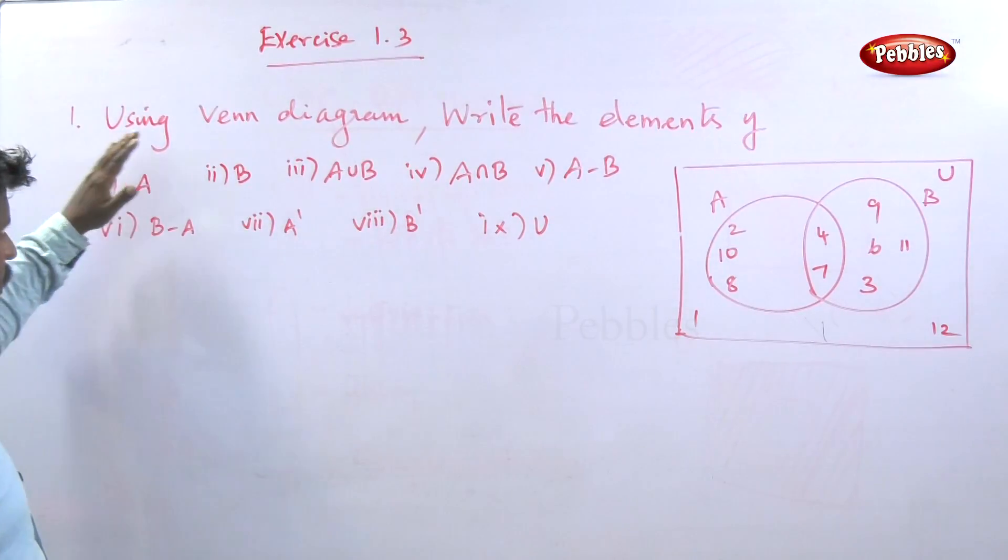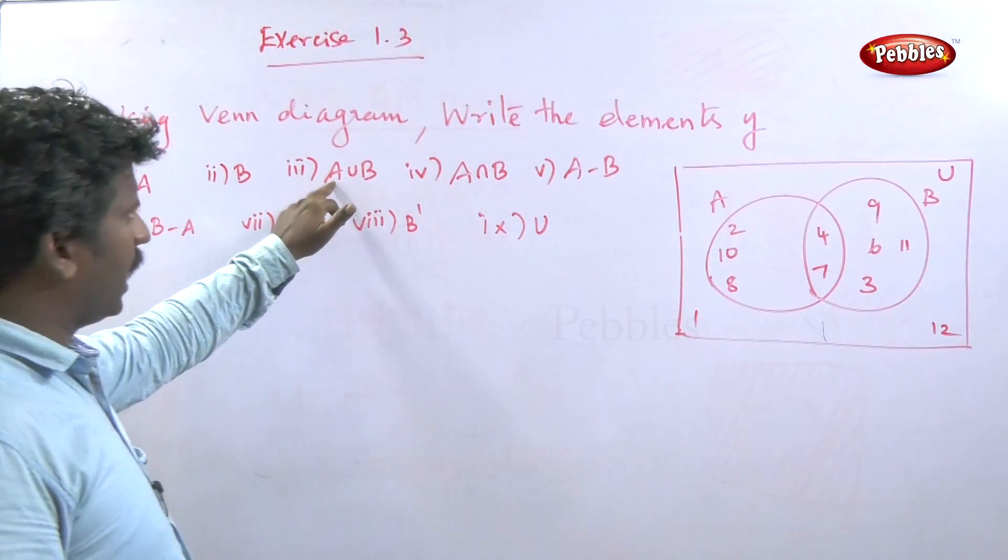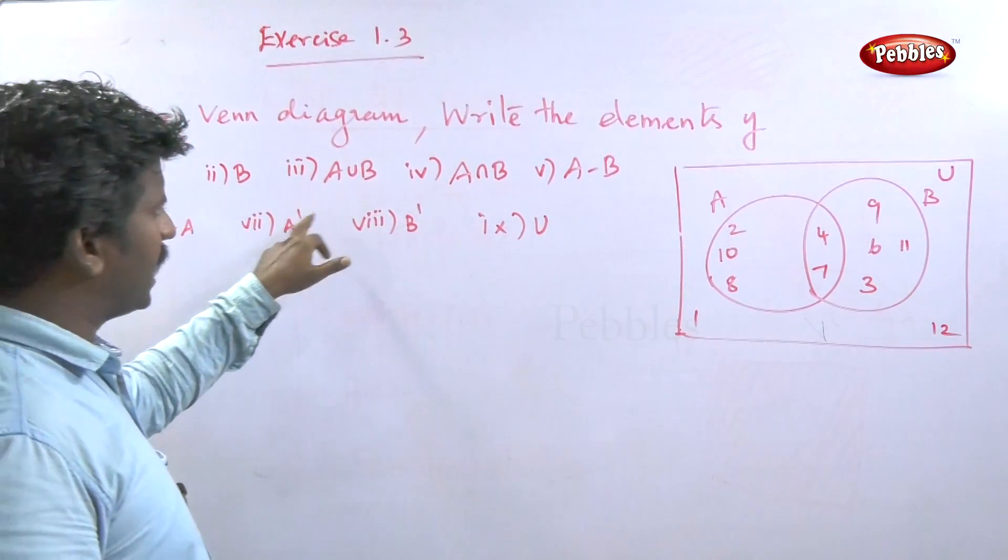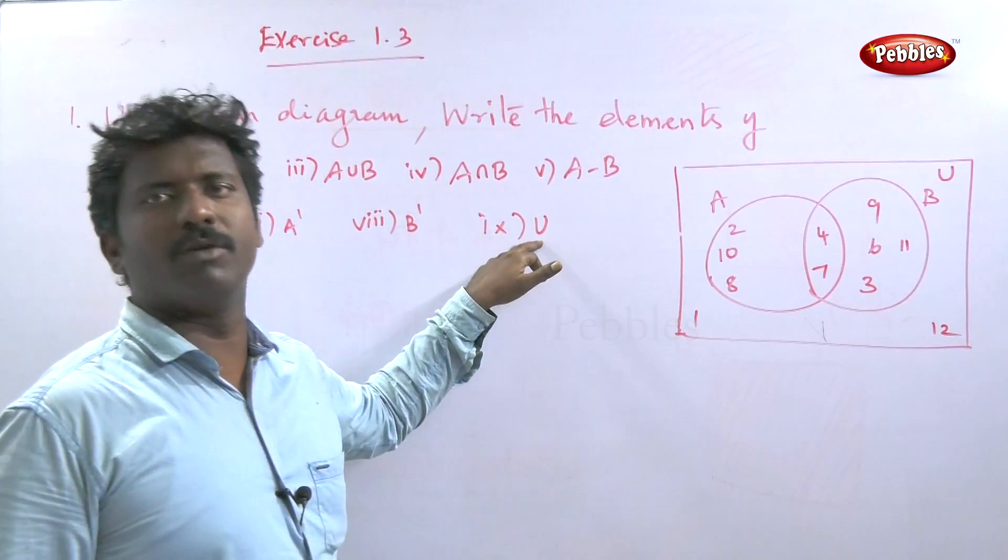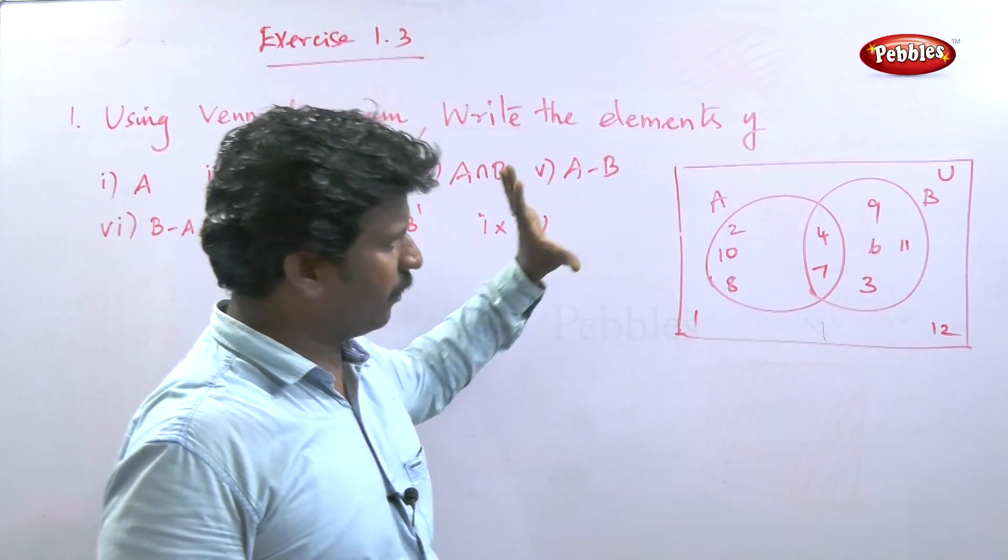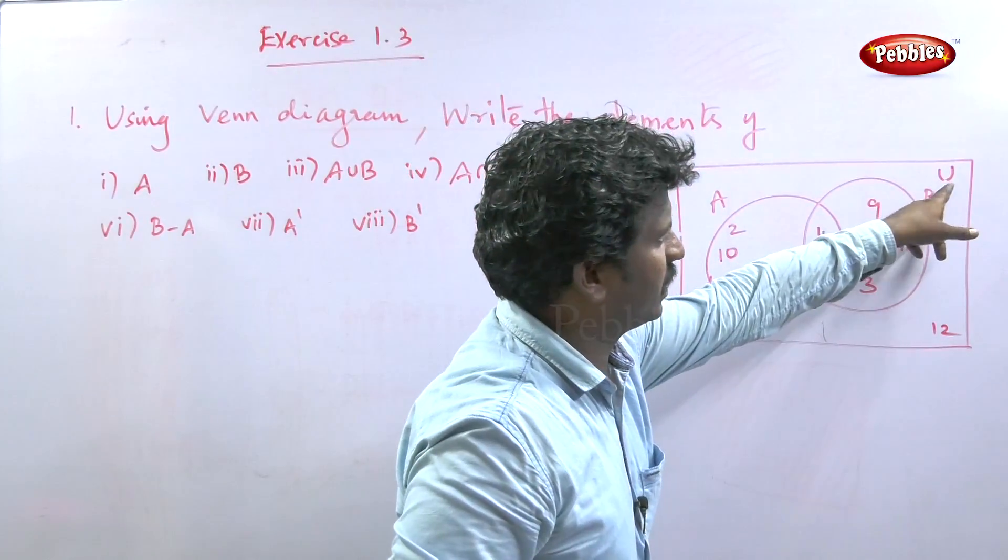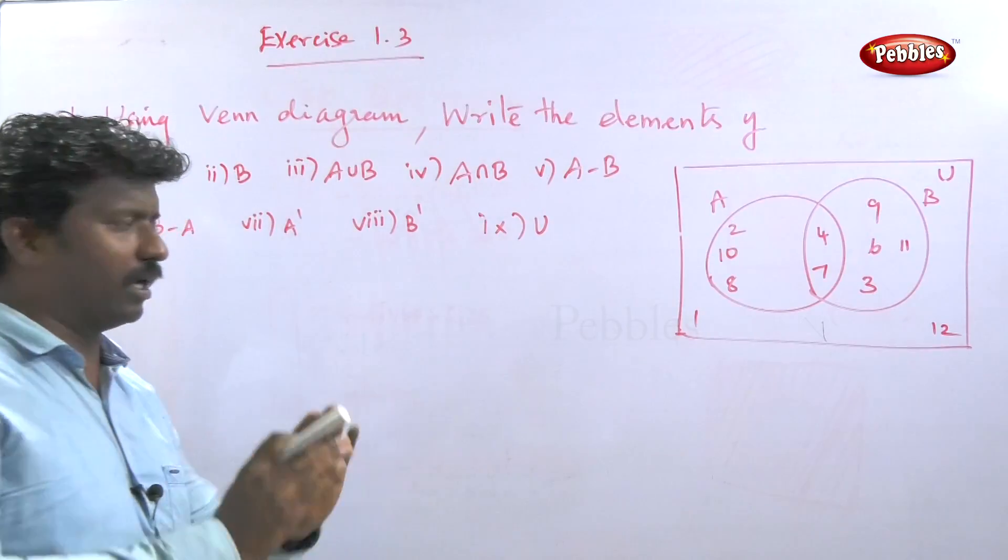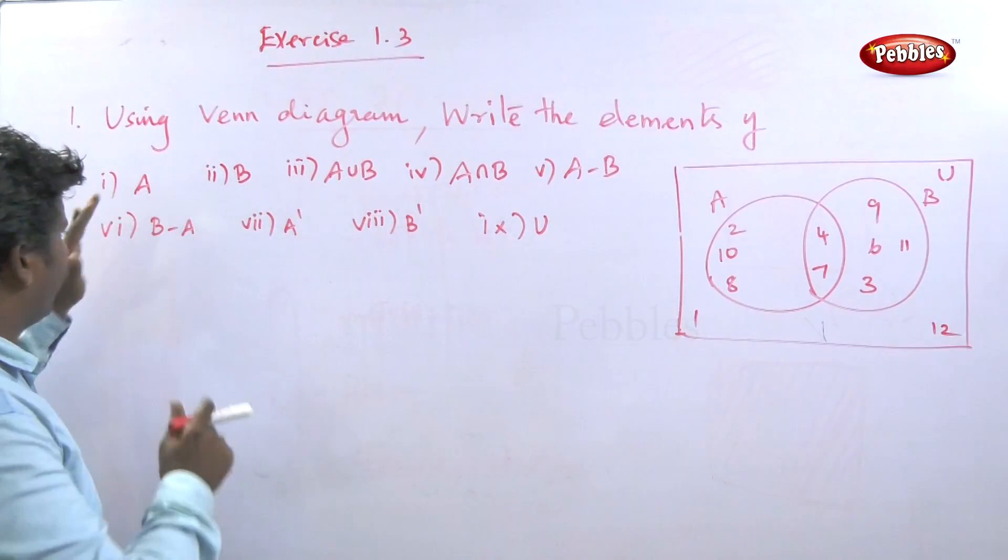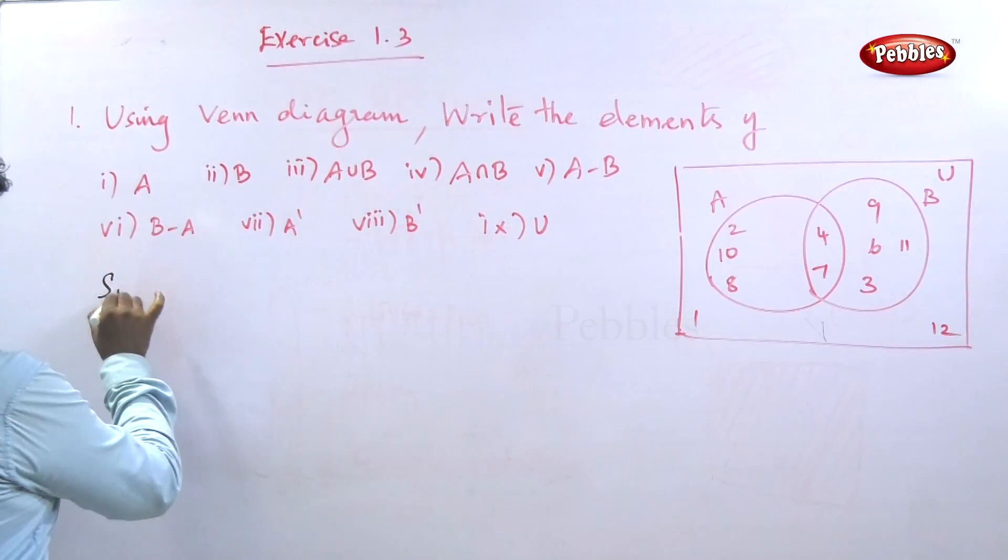See Exercise 1.3. The first question: Using a Venn diagram, write the elements of A, B, A union B, A intersection B, A minus B, B minus A, A dash, and B dash. This is the universal set. Let me draw the Venn diagram. Set A and set B are shown here.